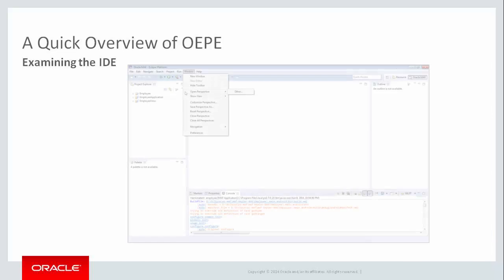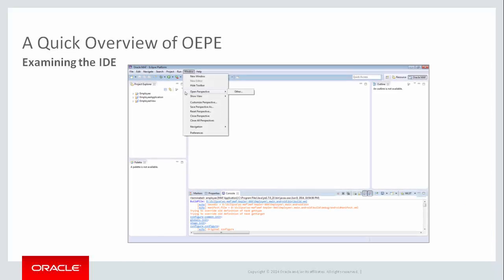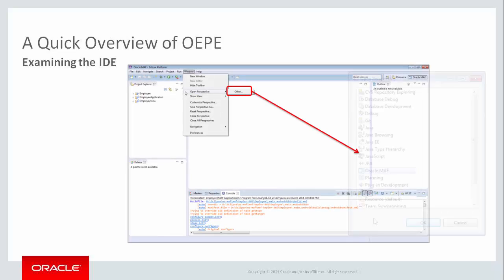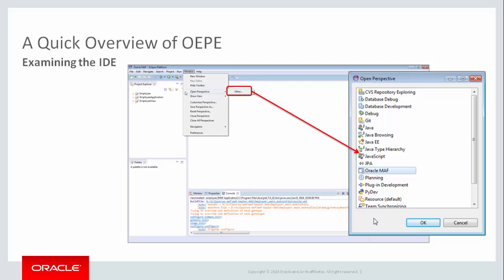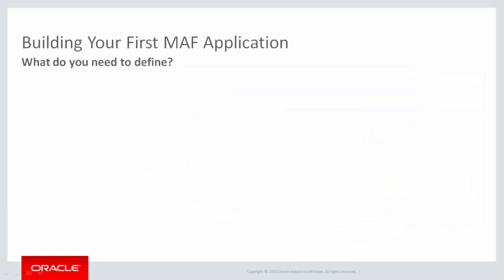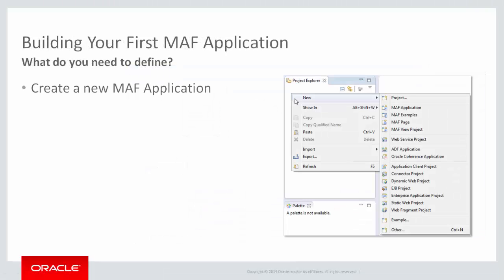If you accidentally close a view or the MAF perspective, you can reopen them via the Window > Show View or Window > Open Perspective menu. So now you're ready to create your first Oracle MAF application.